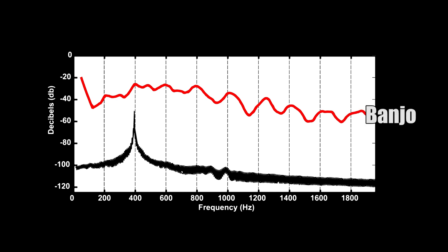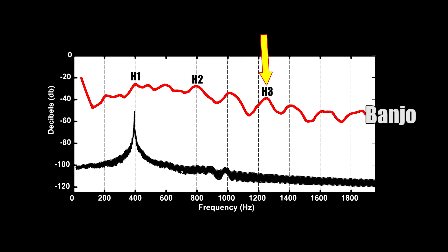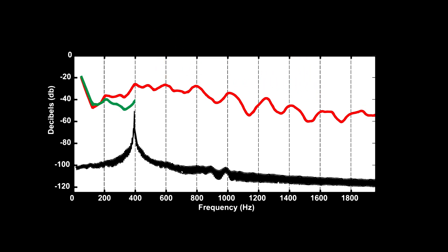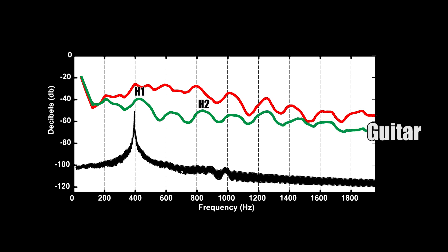First, a comparison with the banjo G. Here we can see the first, second, third, and fourth harmonics, also known as overtones. In between, we see the subharmonics. Next, the guitar G, where we see the first, second, third, and fourth harmonics with subharmonics.